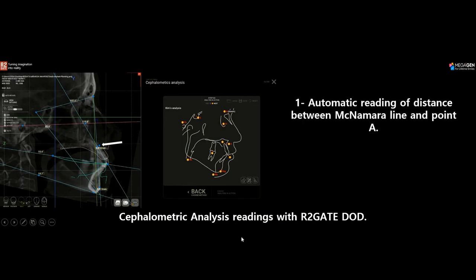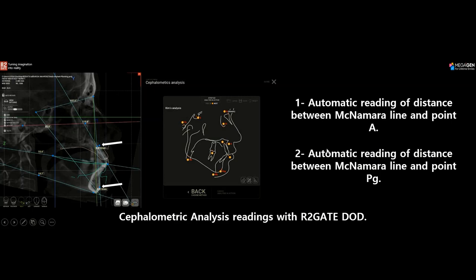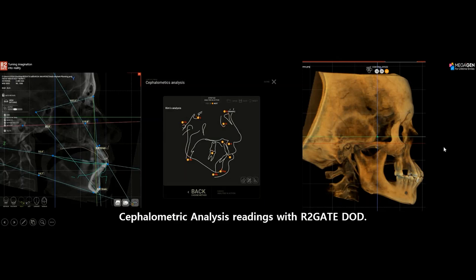In R2Gate Digital Oral Design you get an automatic reading of the distance between the McNamara line and Point A, and the distance between the McNamara line and Point PG. In this case, there is a 5.0 mm distance between Point A and the McNamara line — indicating a protruded maxilla — and a 4 mm distance at PG, meaning this patient has both a protruded maxilla and a protruded mandible. This demonstrates the importance of cephalometric analysis in determining the skeletal relationship.